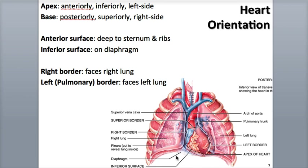The surfaces of the heart include the anterior surface, which is directly under or deep to the sternum and ribcage. The inferior surface is the area that sits on the diaphragm, between the apex and the right surface, or right border, located next to the right lung, and the left surface, or left border, which is next to the left lung.